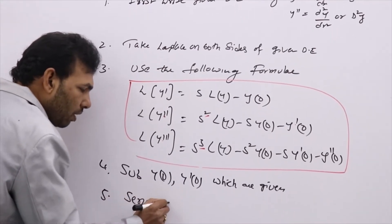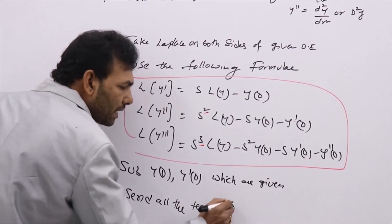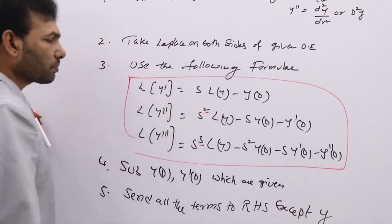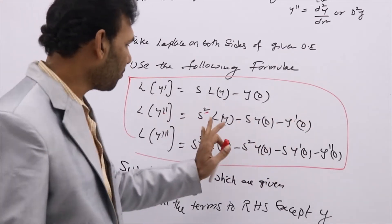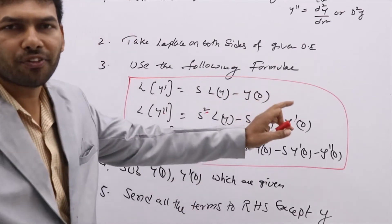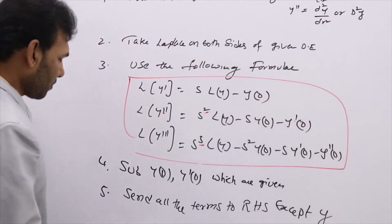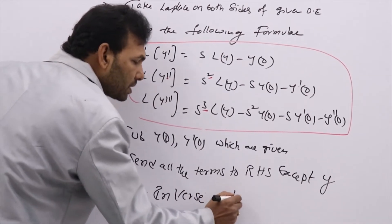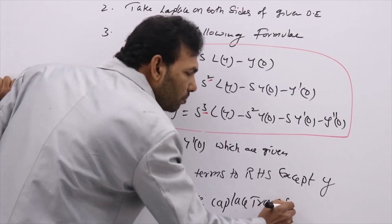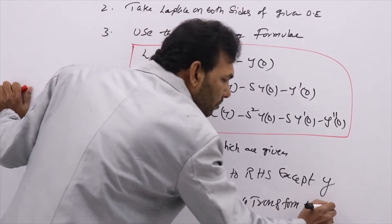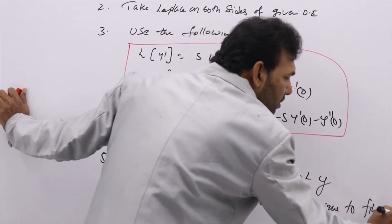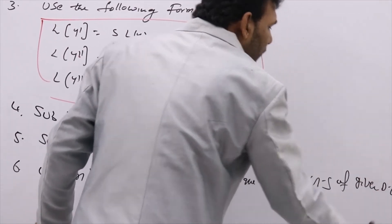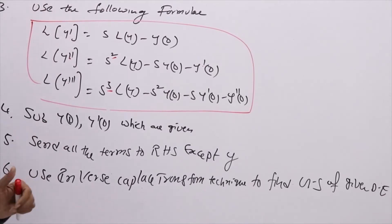Now send all the terms to the RHS except L{y}. When L moves to the RHS, it becomes L inverse. Then use inverse Laplace transform techniques to find the general solution of the given ODE.